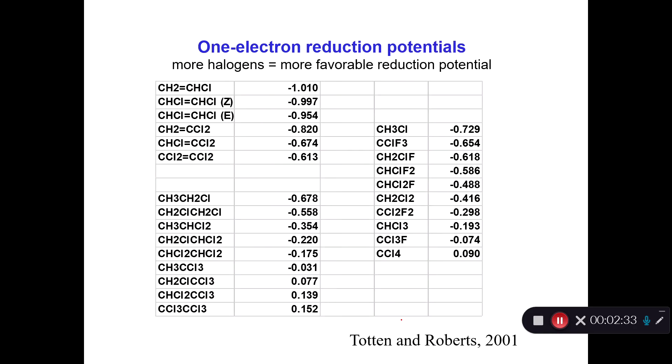We can look at the one-electron reduction potentials and we see across the board they're not particularly favorable, except for carbon tetrachloride, which is quite favorable. Here's hexachloroethane, it's quite favorable. But even the perchloroethylene is not that favorable. The take-home message here is that the more halogens you have on the molecule, the more favorable your redox potential is.